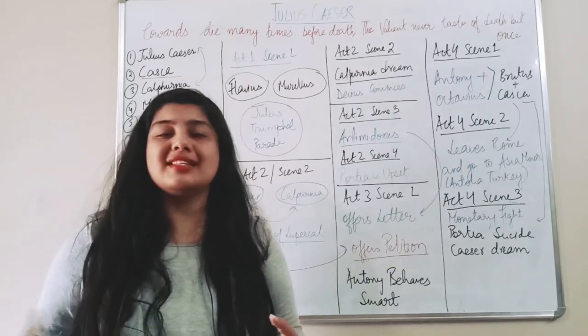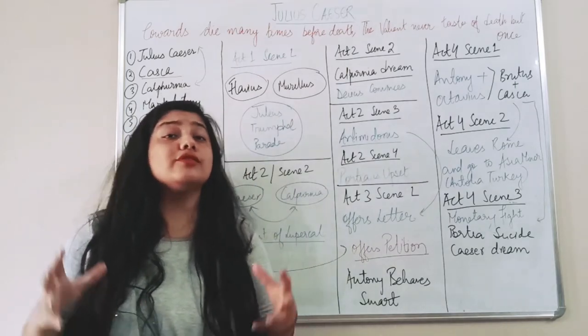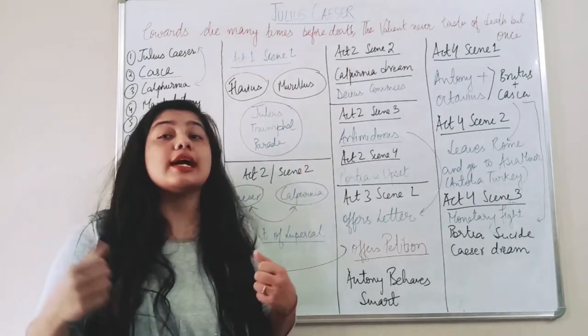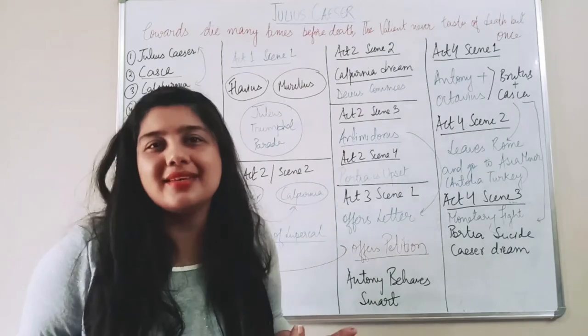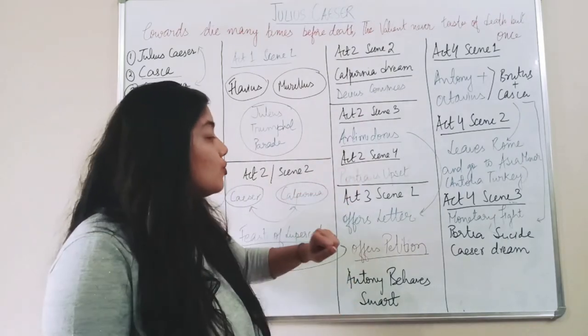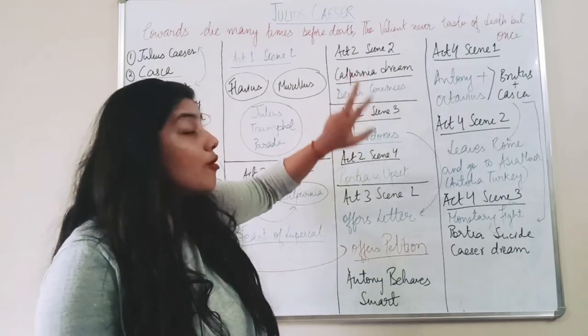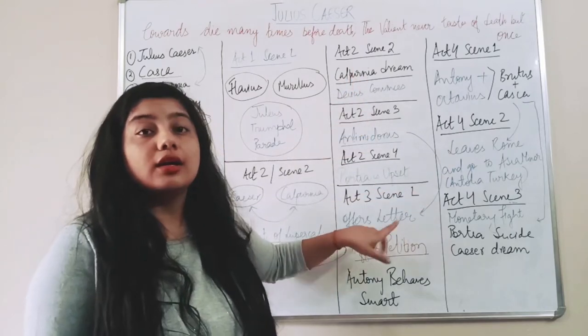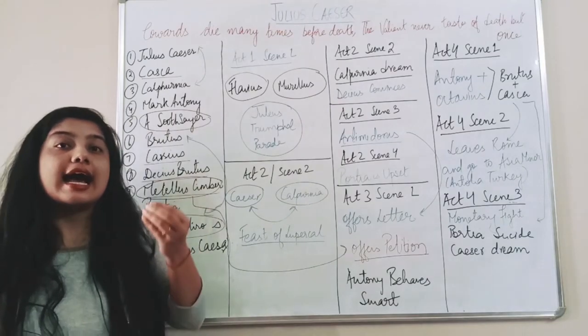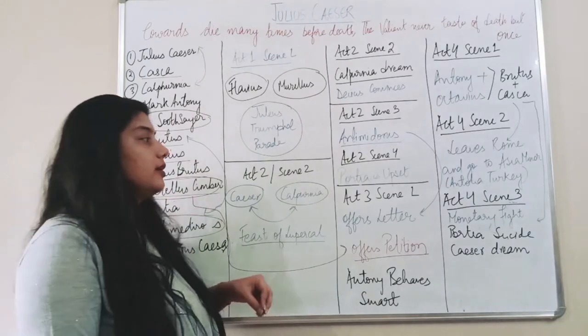So initially Caesar refuses. Caesar said that 'I am not going to be a part of this country, you are not going to be the king.' But he is doing it so that more and more people can request Caesar that 'Caesar please, you want you to be the king.' So initially he refuses but when Decius Brutus offers Caesar the letter he accepts this.